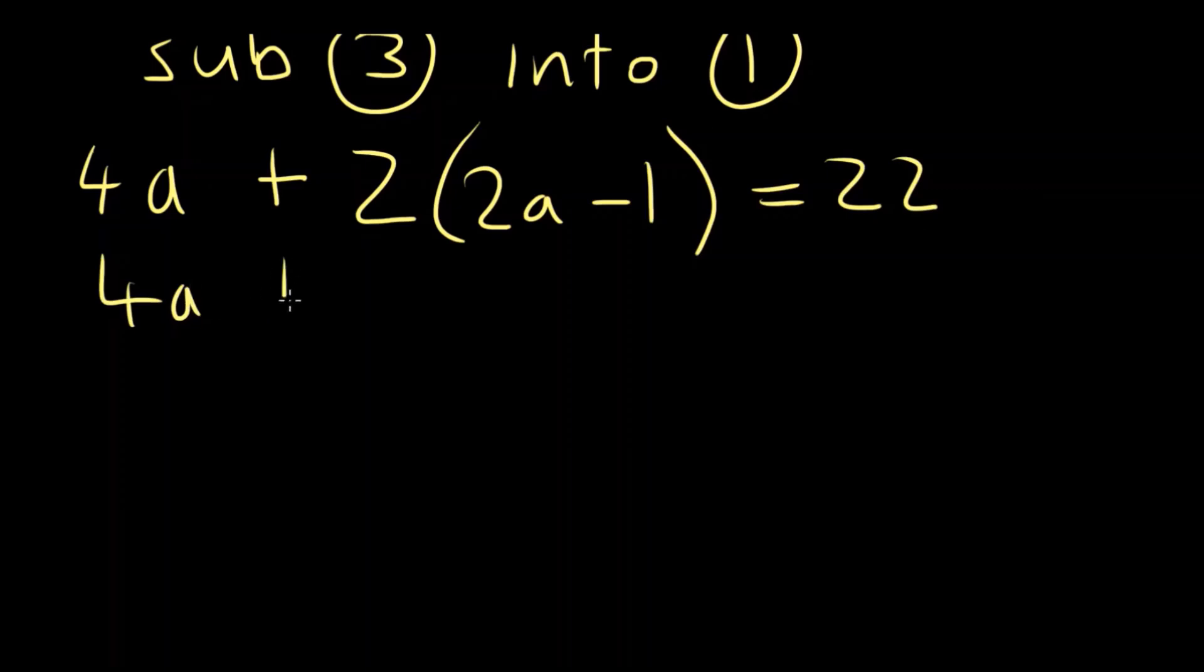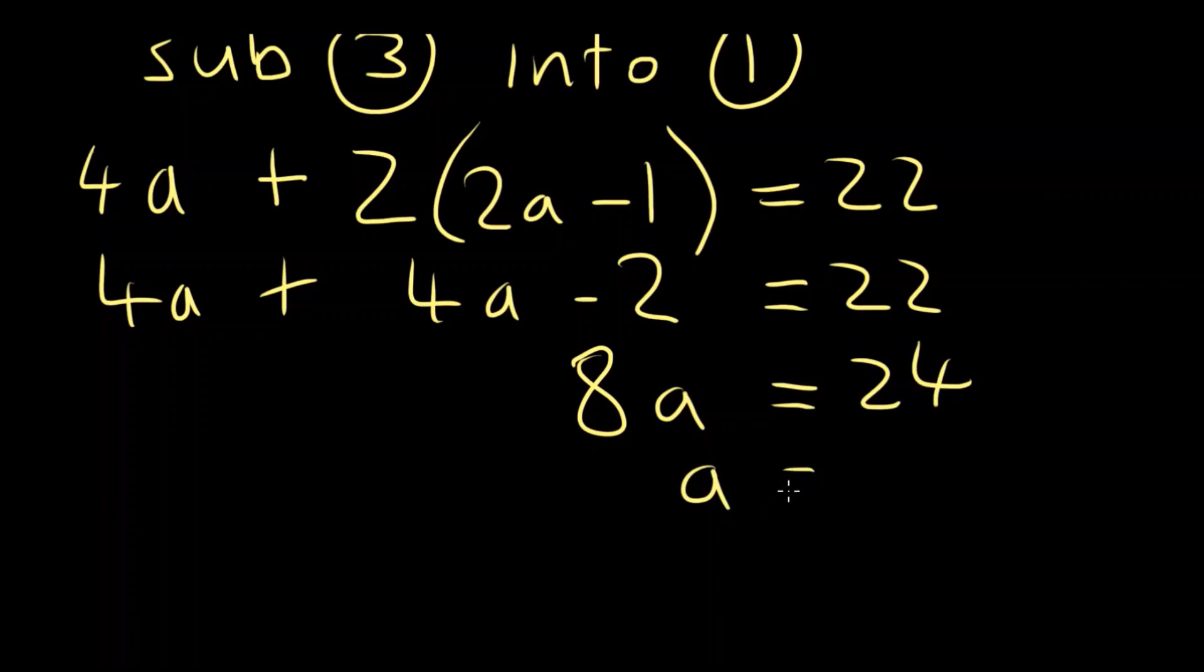Expand those brackets. 2 times 2a is 4a, 2 times minus 1 is minus 2 equals 22. Get all the a's on one side and all the numbers on the other side. So we'll have 8a equals 24. A will equal 3.